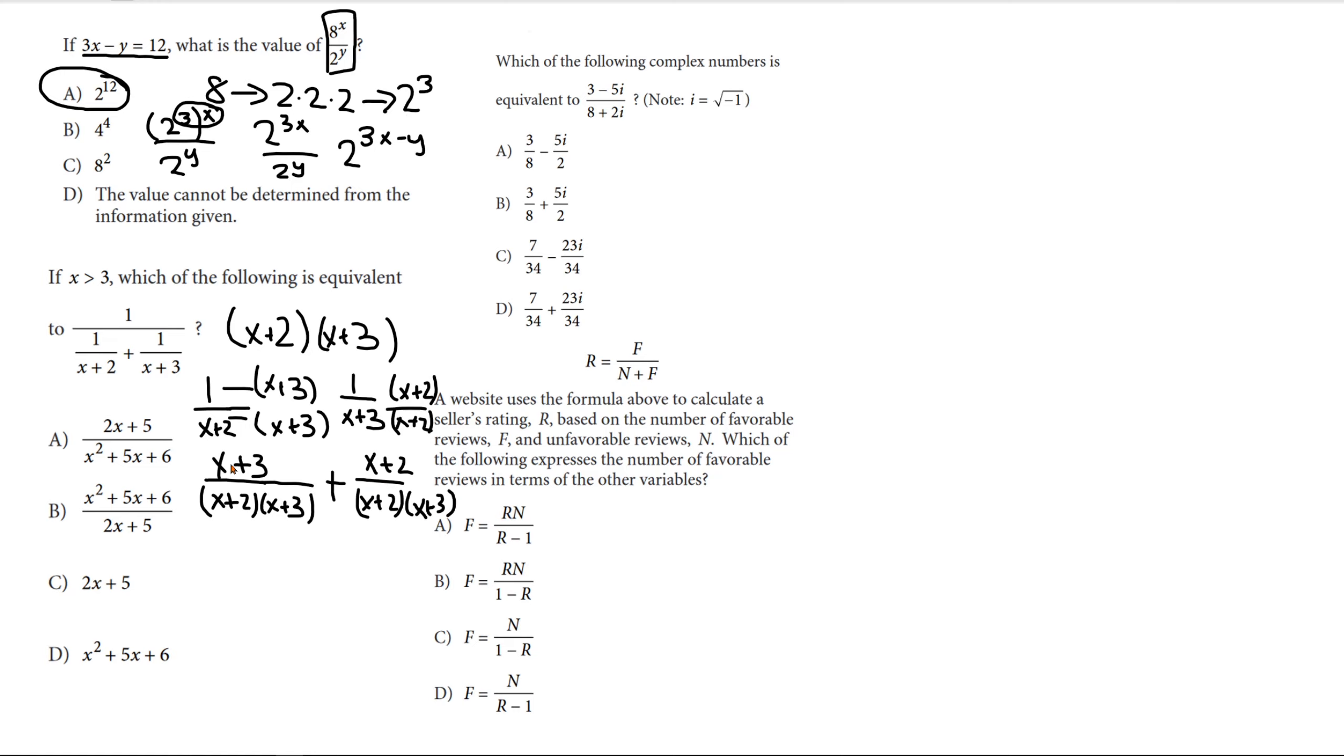So, if we multiply these two, we also get x plus 2 times x plus 3. And now, all we need to do is just add them since the operation is addition. So, 2x plus 5 over x plus 2, x plus 3. And that's all over 1.